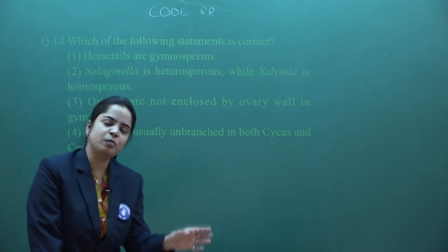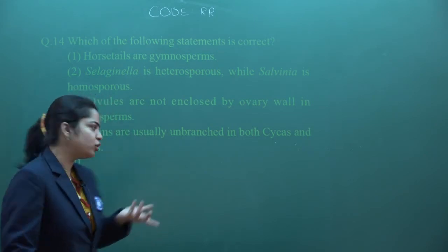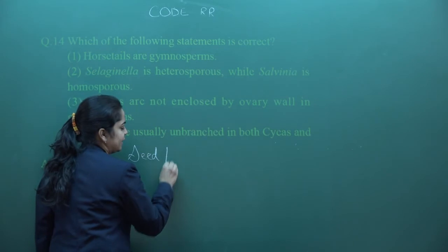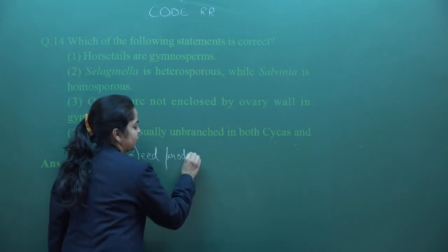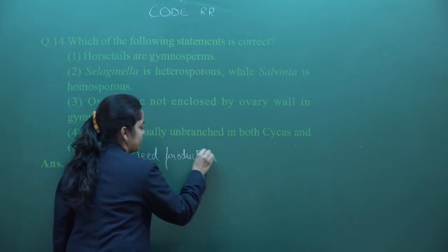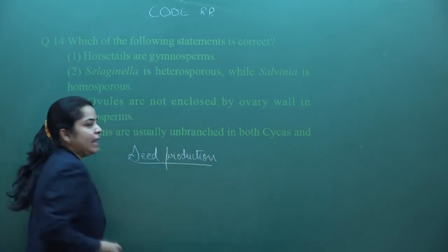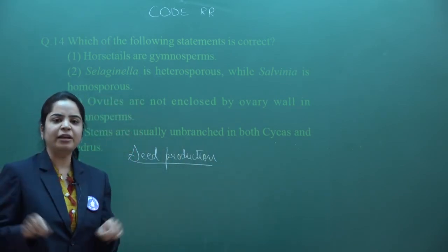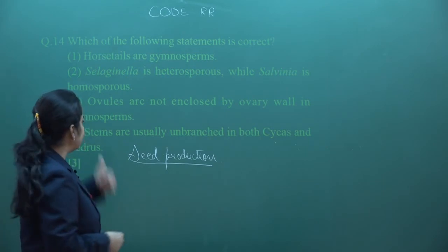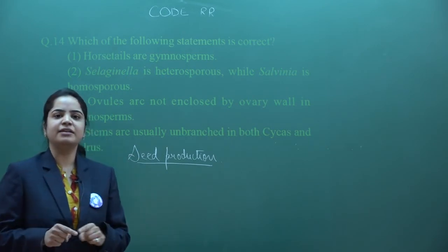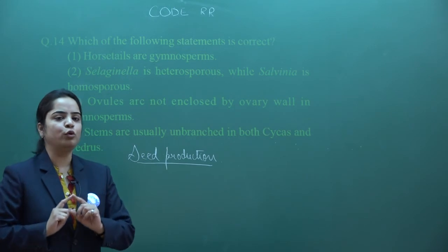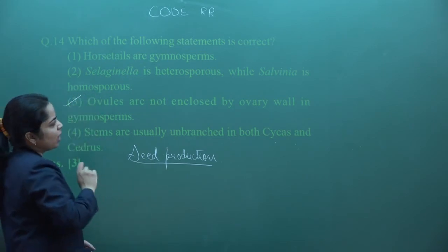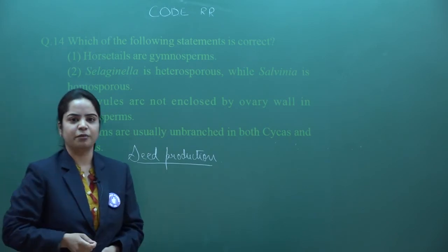Why is that correct? Because when we differentiate gymnosperm and angiosperm, both are seed producing. But in angiosperm the ovule is enclosed in an ovary, while in gymnosperm the ovules are not enclosed by ovary. So the answer of the question will be third - that ovules are not enclosed by an ovary wall in gymnosperm.